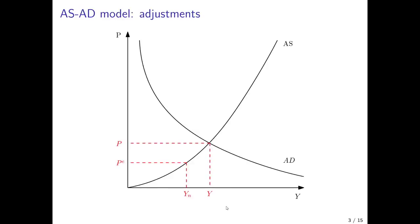In the discussion so far I've only mentioned what I call the short run equilibrium, basically at the intersection of the AS and AD curves, where we have equilibrium output or income and equilibrium price level. However, this need not be the medium run equilibrium, where prices are equal to price expectations and output is equal to natural output.